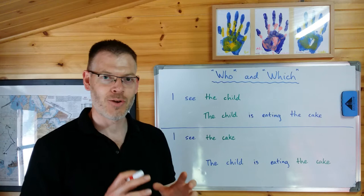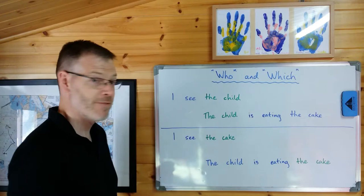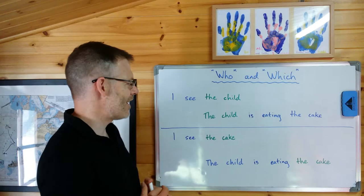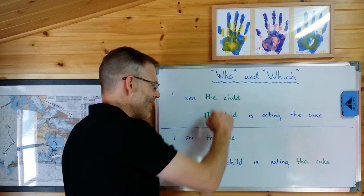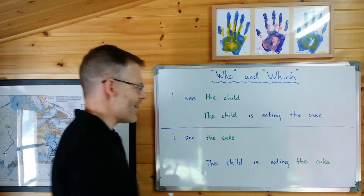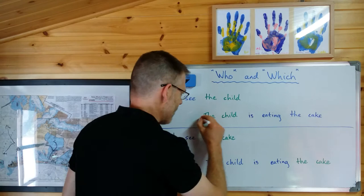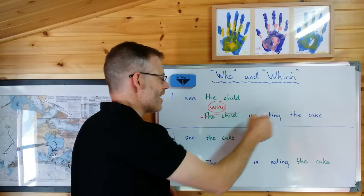Take a look at these examples and you'll see very quickly what I mean. Just look at these two sentences: 'I see the child' — first sentence. 'The child is eating the cake.' Press pause on the video and see if you can figure out how you could join these two sentences together into a single sentence. The clue is in the colours in green right there. Okay, I hope you could see that you would very easily join these two sentences together by getting rid of 'the child' and replacing it with the word 'who.' I see the child who is eating the cake. Makes sense? Very straightforward.